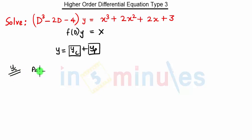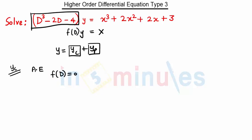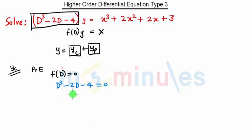We will first find yc. To find yc we need an auxiliary equation. An auxiliary equation is nothing but f(D) = 0. Our f(D) is D³ - 2D - 4 = 0, so we need to find the roots of this equation.